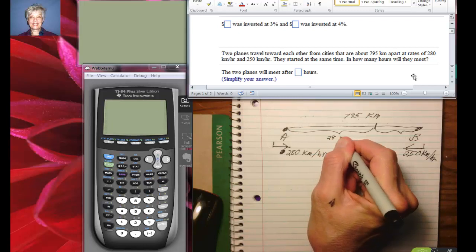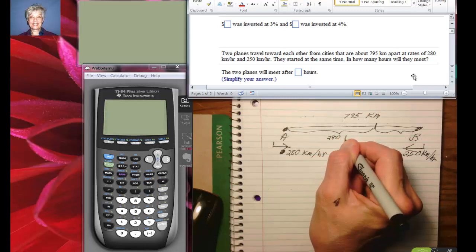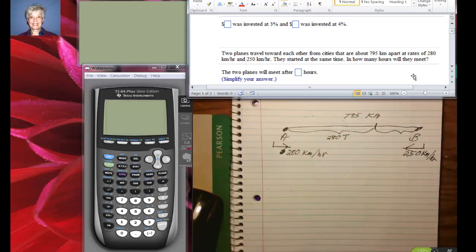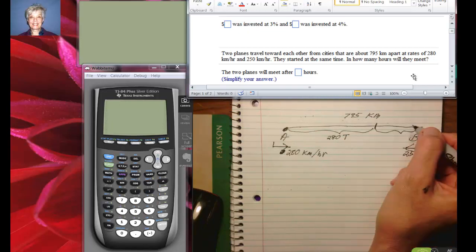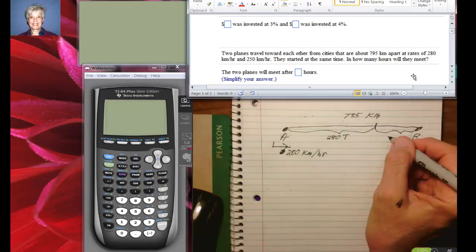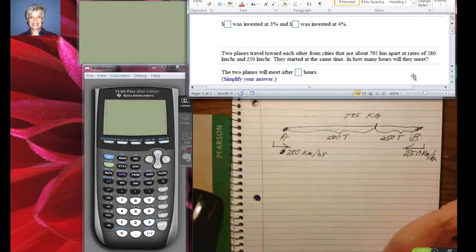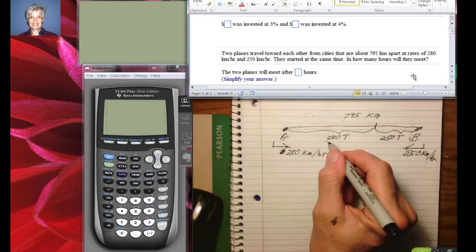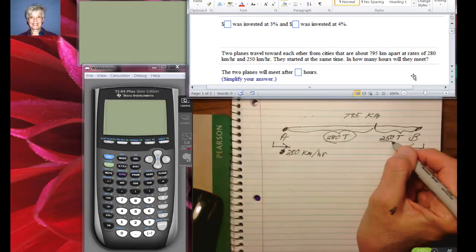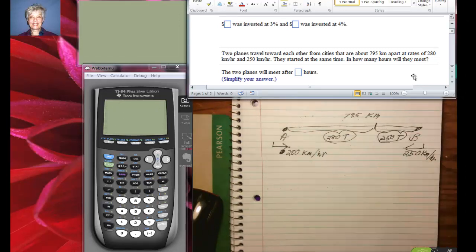And this distance here is going to be 250 kilometers per hour times the time traveled, and that this distance plus this distance is going to equal 795 miles - period, kilometers, period. So let's add them up: 280t plus 250t equals 795 kilometers, because this is kilometers and this is kilometers, and together they both equal that many kilometers.